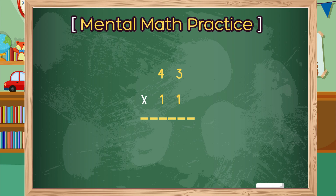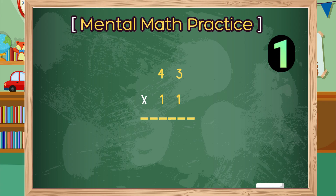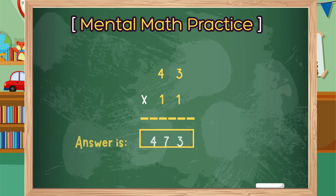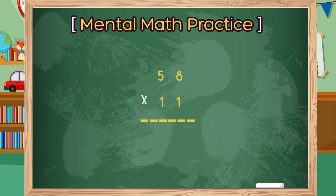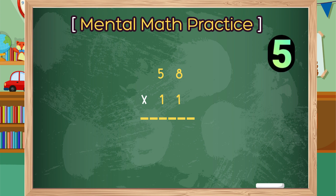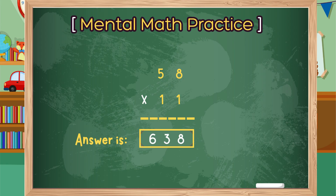What is 43 times 11? The correct answer is 473. Did you get it right? What is 58 times 11? The correct answer is 638. Did you get it right?